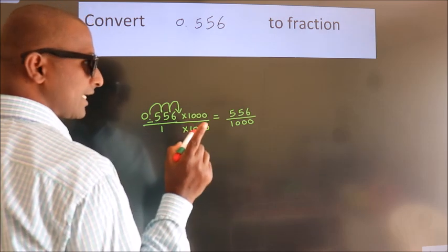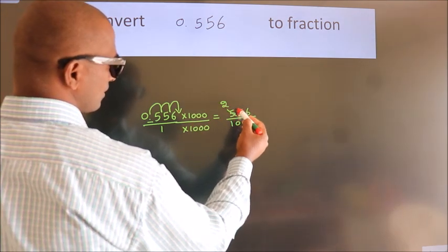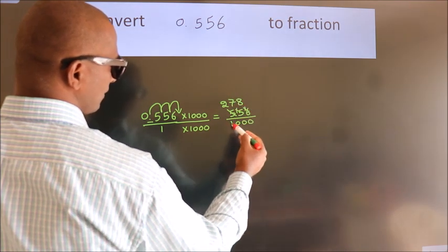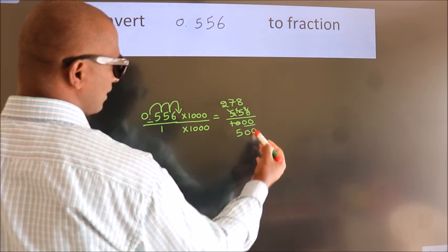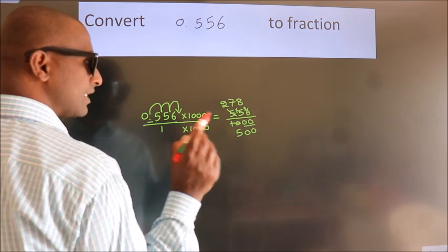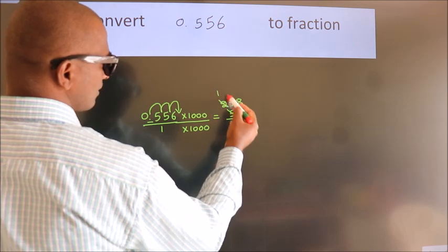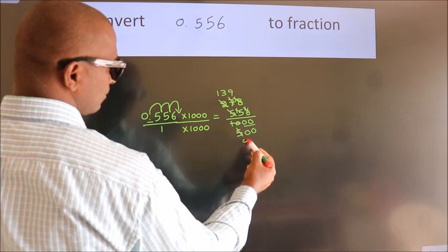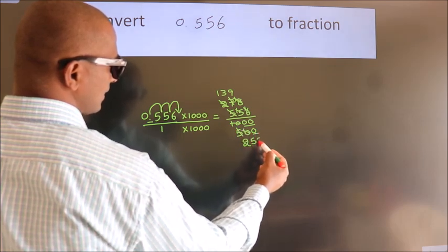Now I cancel with 2. 2 2s, 2 7s, 2 8s, 2 5s, the 0s as it is down. Now I cancel with 2 again. 2 1s, 2 3s, 2 9s, 2 2s, 2 5s, the 0s as it is down.